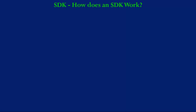In my last video, we wrote our first C++ program, and what we did was write the program in an SDK. An SDK is a software development kit. And my question is, how does it work? Well, to understand that we have to consider how a C++ program is processed, because an SDK helps us to process our C++ program.